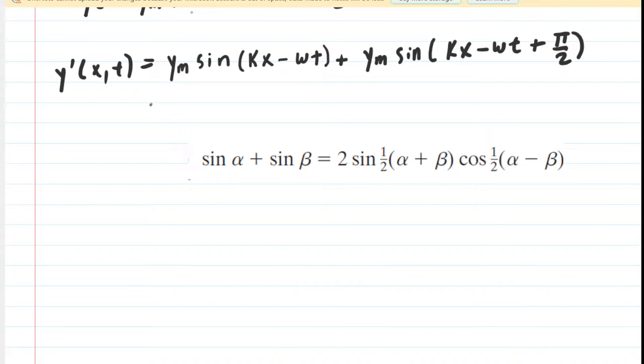This identity might be given to you on a reference sheet during your exam, because it is a little bit daunting. But it tells us that we can take the sine of an angle α and add that to the sine of a different angle β and then come up with this rather complex-looking argument here.